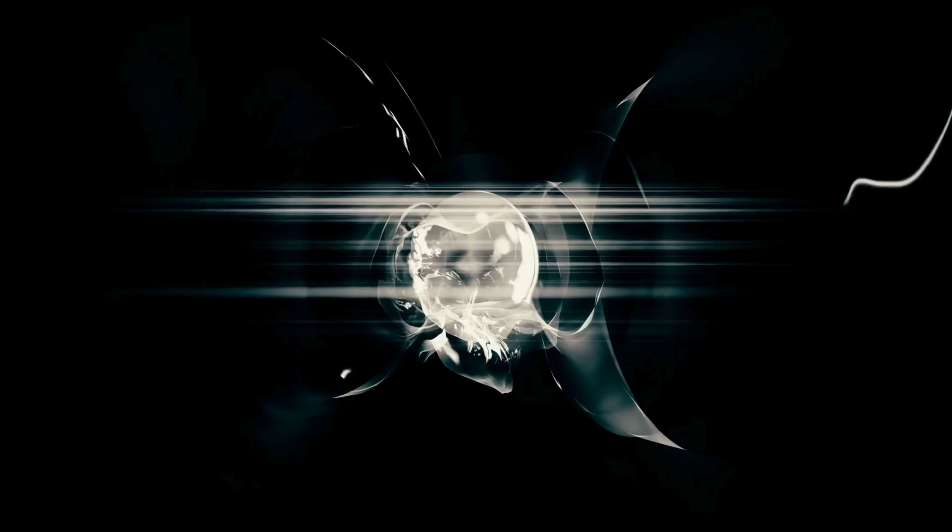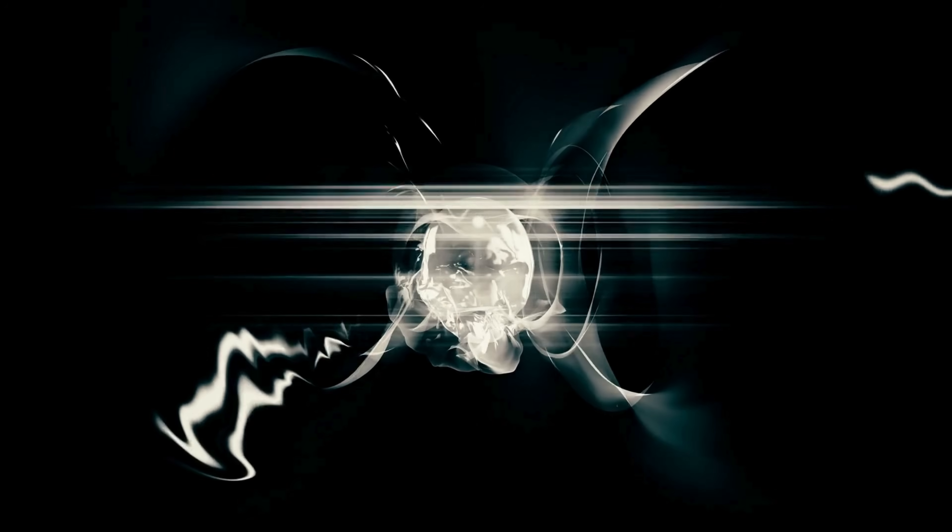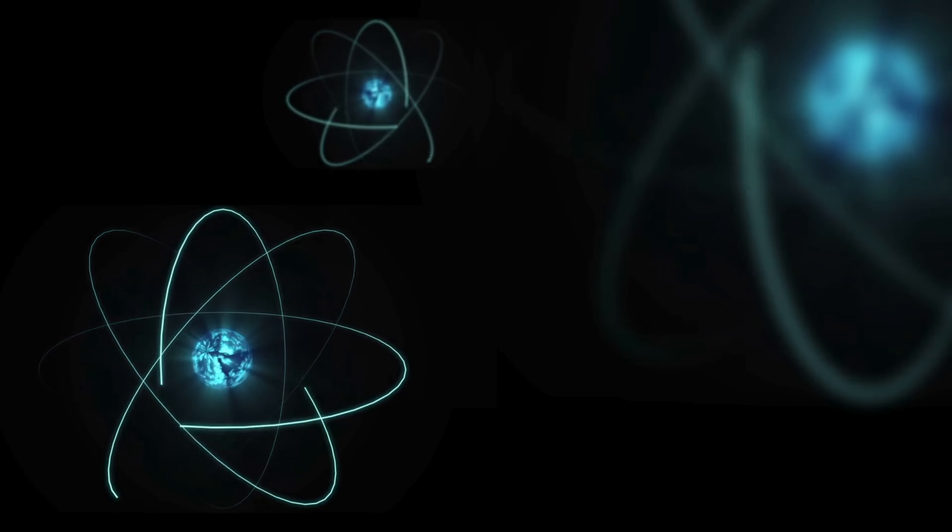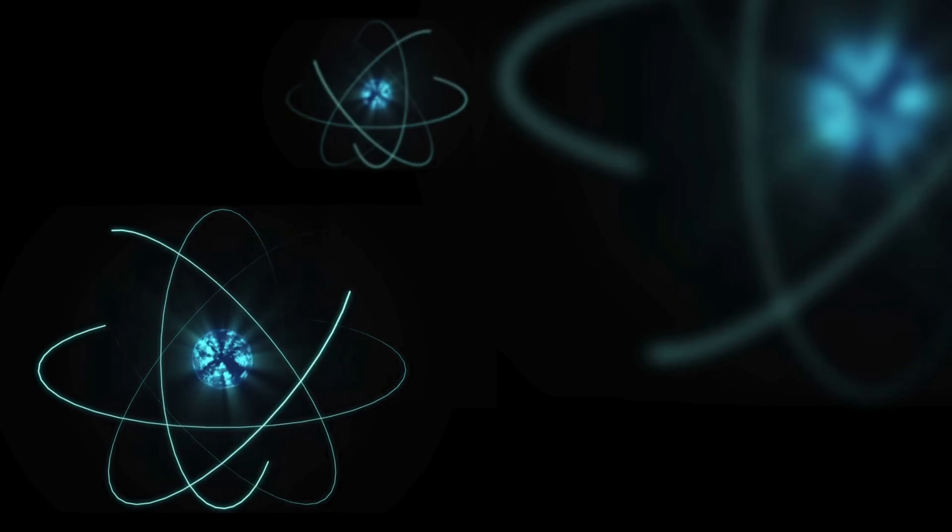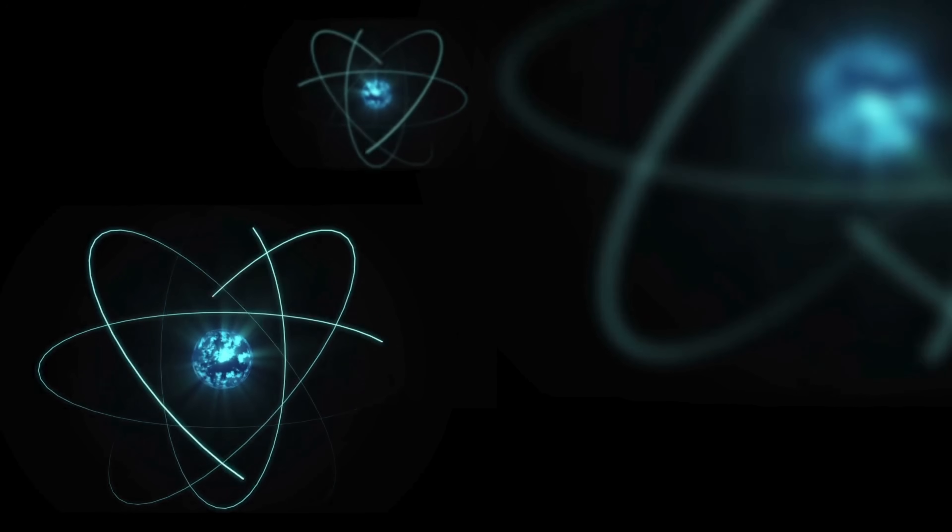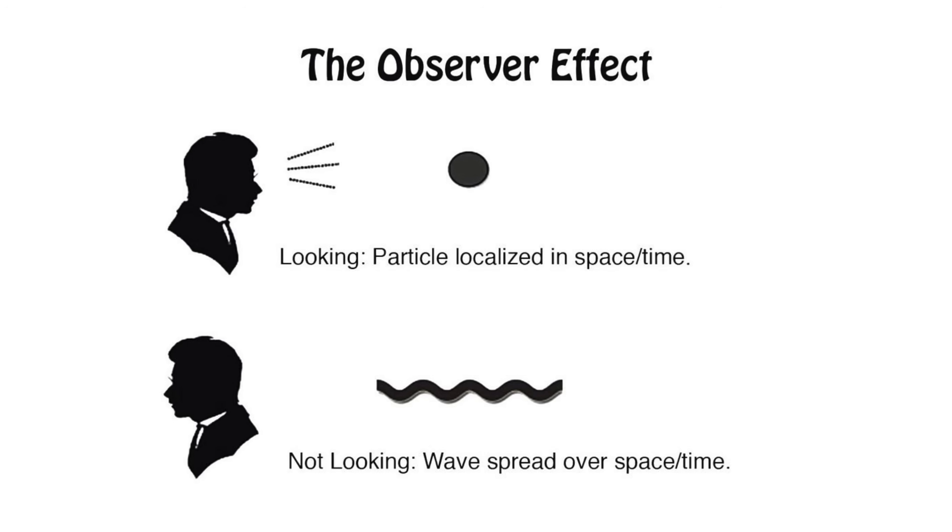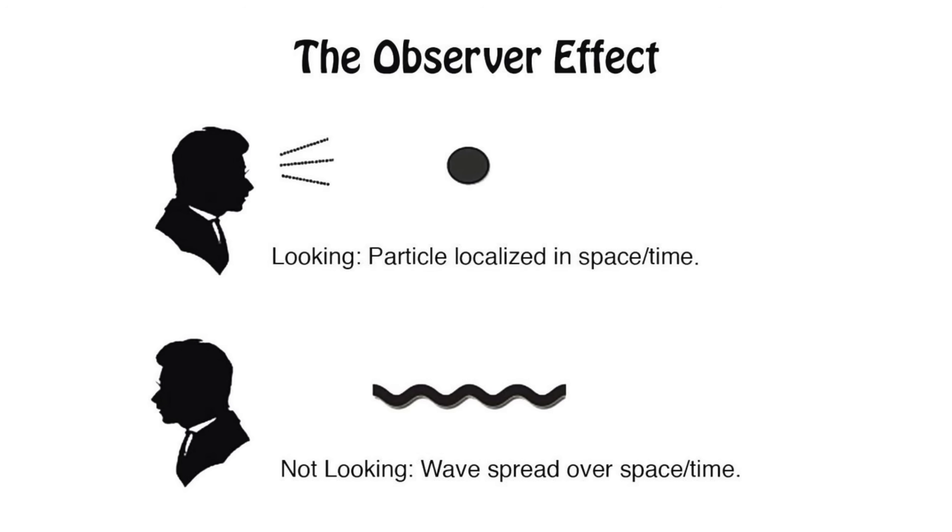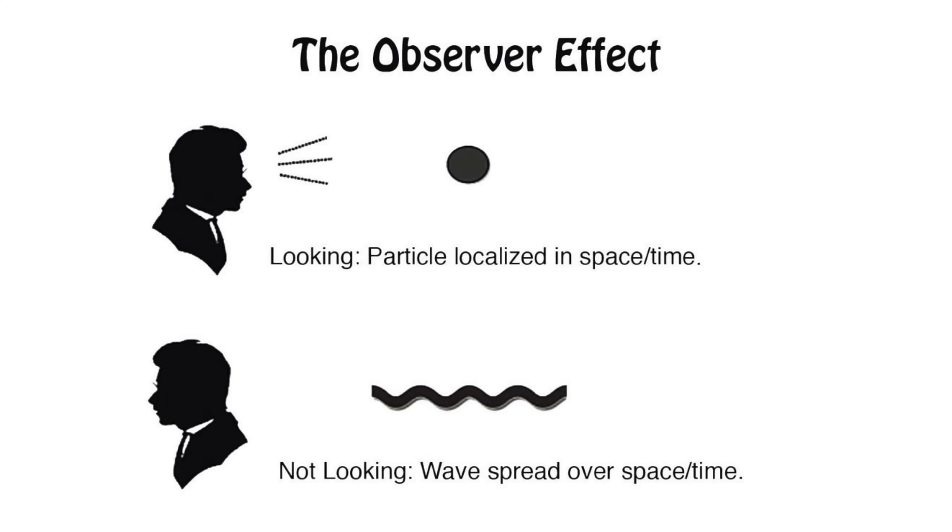These questions remain at the heart of quantum mechanics. And we still don't have all the answers. Before we measure an electron, it behaves as if it's in multiple places at once, existing in a strange state of probability. But the moment we observe it, it chooses a single position. This is called the observer effect, and it suggests that at the quantum level, reality is not fixed until it is measured.